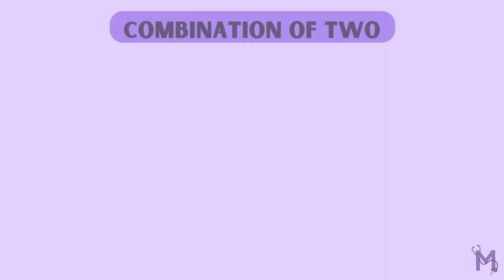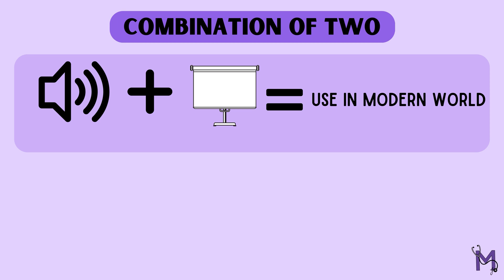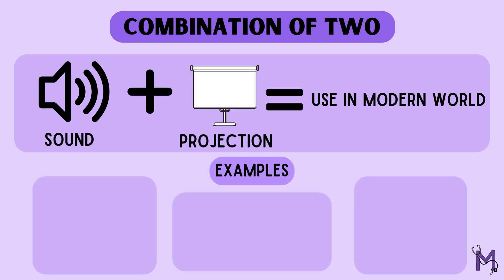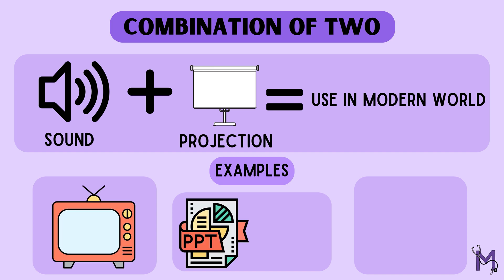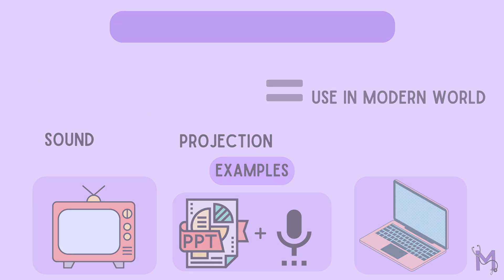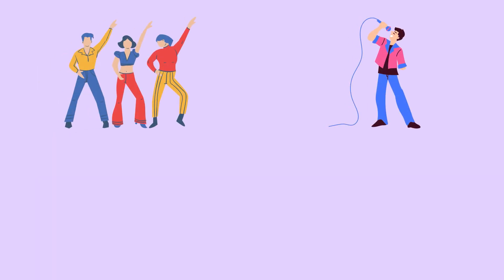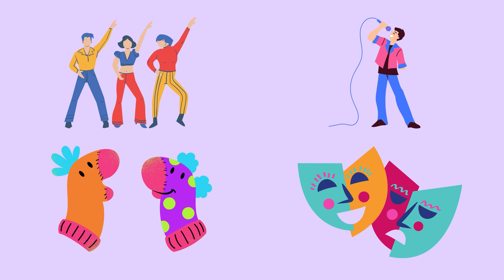Since we've already seen the advantages of both auditory and visual aids, why not combine the two? A combination of the two is what we use in the modern world. Upon combining both sound and projection, a better presentation can be made. These include televisions, tape and slide combinations, multimedia computers, etc. Traditional media like folk dance and songs, puppet shows, and drama can also be included under this category.